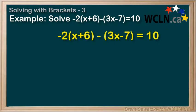Let's begin with our distribution. Negative 2 times x is negative 2x. Negative 2 times positive 6 is negative 12.